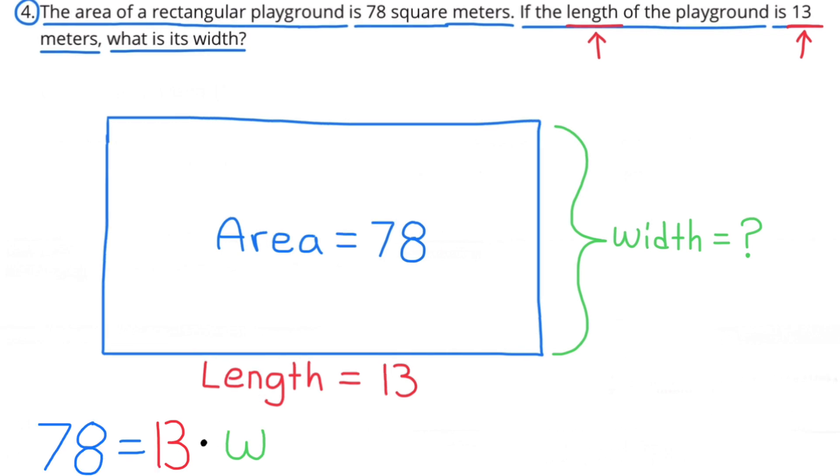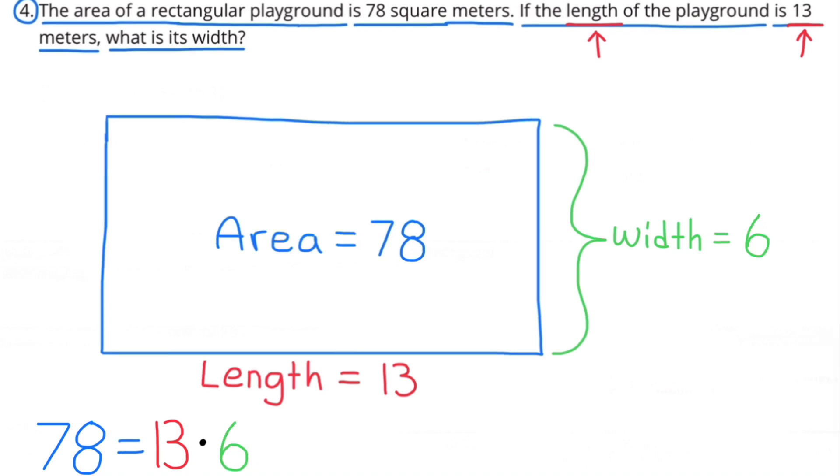And since we know the area is 78, 78 equals 13 times the width. What number times 13 equals 78? 6. Or 78 divided by 13 equals 6. So the width is 6.